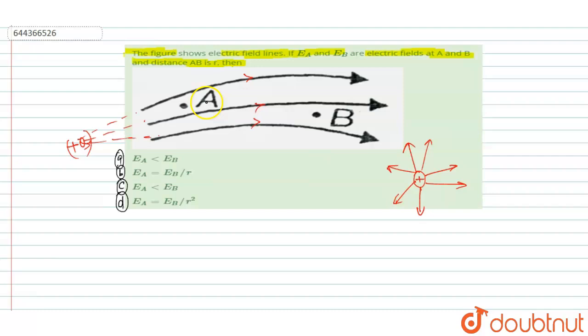We know that total number of electric field lines going through a given area defines the strength of the electric field. When we take an area, this area, then total number of electric field lines going through is 1, 2, 3.